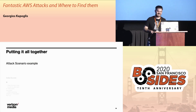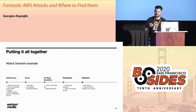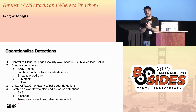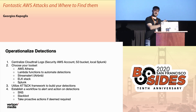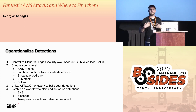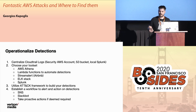To operationalize the detections: first, centralize the AWS logs. You shouldn't have them spread across different accounts in your environment — you should send them to your own security account. At Verizon Media, we have more than 1,000 unique AWS accounts, and we send all CloudTrail logs to a specific account that the security team has access to and can secure.